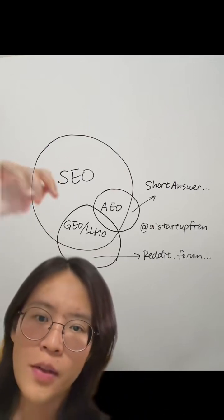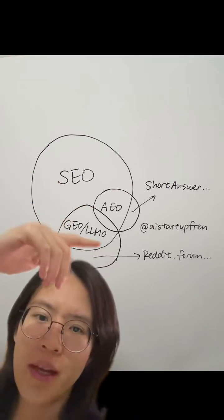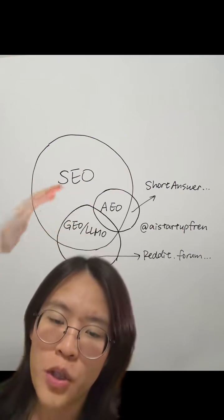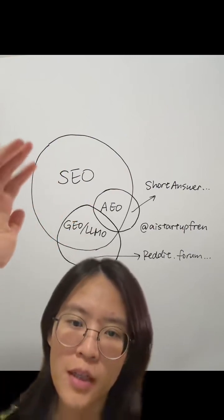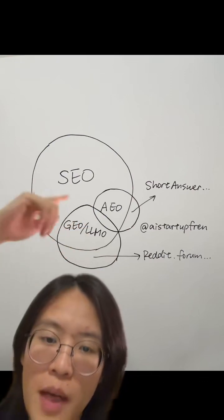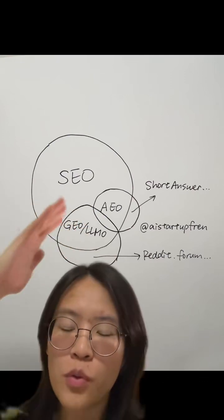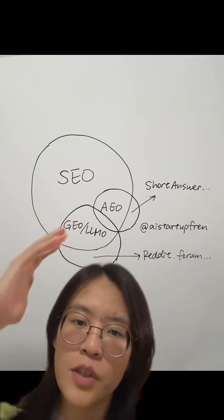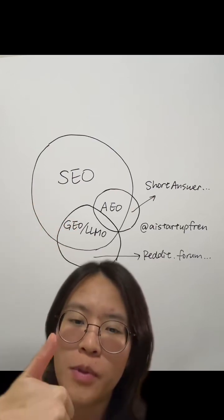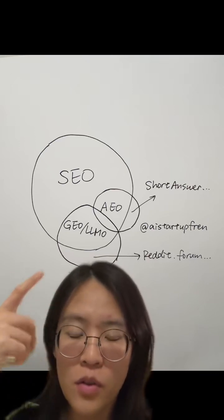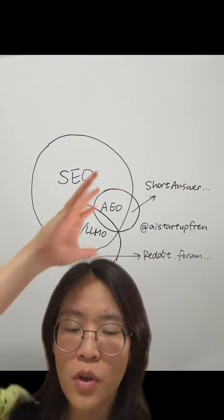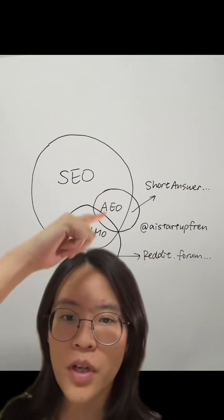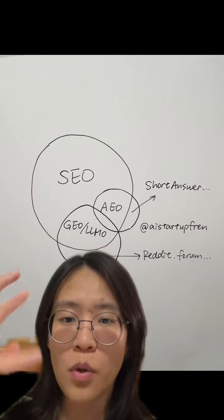What's the difference between SEO, AEO, GEO, and LMO? They all have the same goal, which is making your product show up when people are searching. There's a lot of overlap here, which means that if you do the original SEO — search engine optimization — well, which is keywords, optimizing, writing good articles, getting good backlinks, you are already doing most of the job.